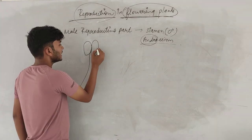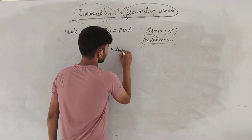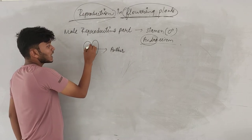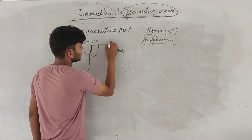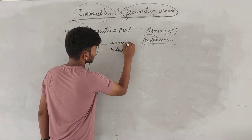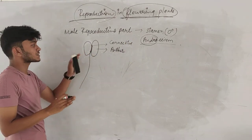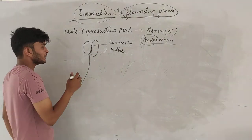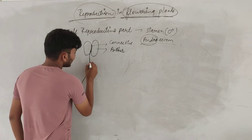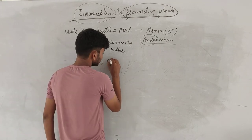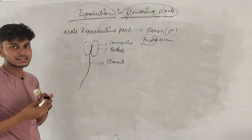Each stamen is made of two lobes, and the lobes are made of the anther. The anther is connected by a structure known as the connective. And the anther has a filamentous structure that is known as the filament.